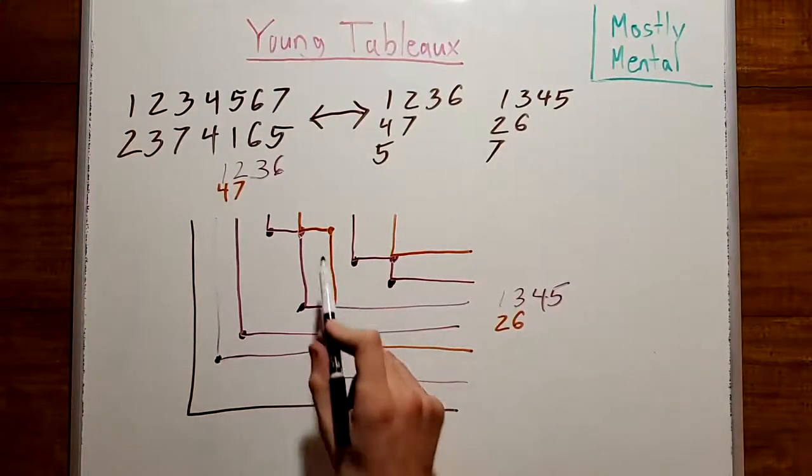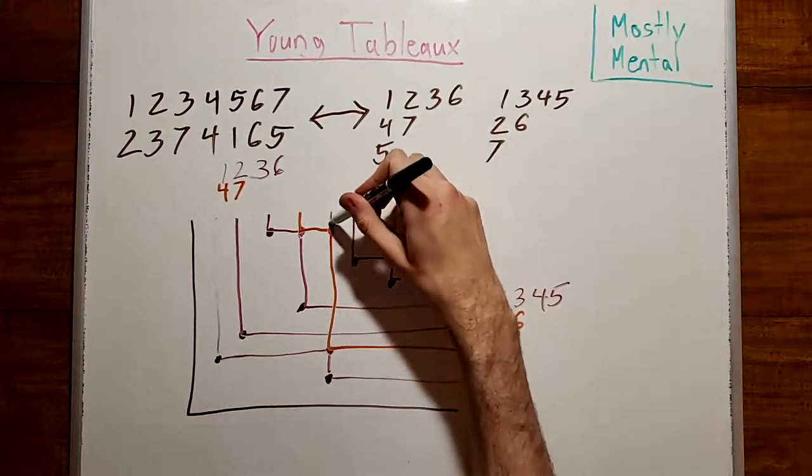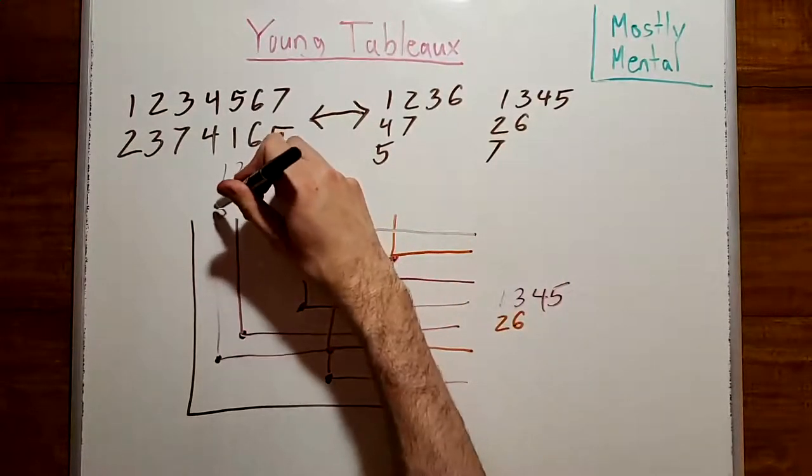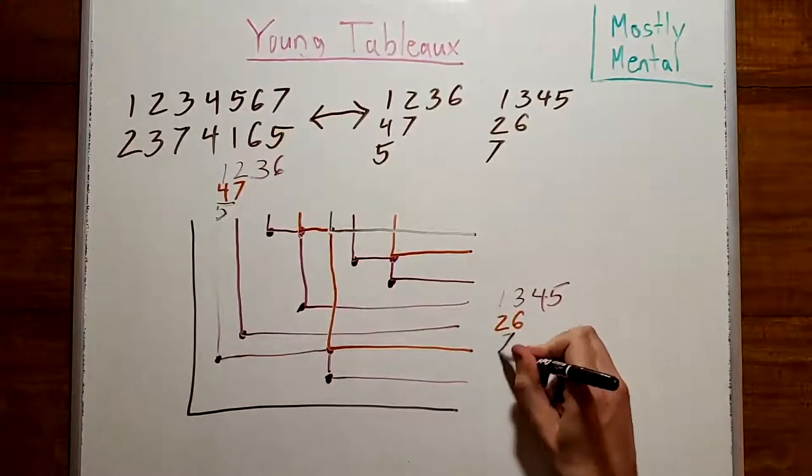And we have one more intersection point, so we'll do this procedure one more time. And this will give us 5, and 7.